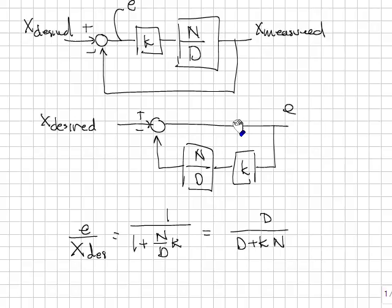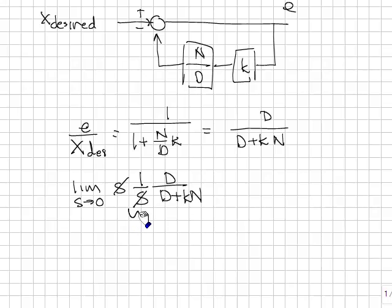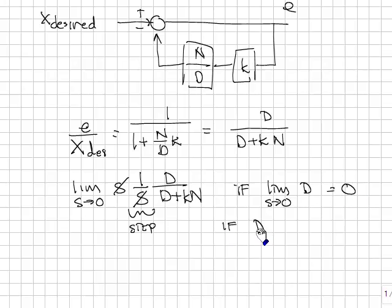The input is x-desired and the output is e. Doing the block diagram algebra, the resulting transfer function from x-desired to e is D over (D + KN). To find the steady-state error when x-desired is a step input, I apply the final value theorem: the limit as s goes to 0 of s times (1/s) times D/(D + KN). The s terms cancel, and I'm left with the limit as s goes to 0 of D/(D + KN). I want this steady-state error to be 0.